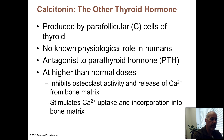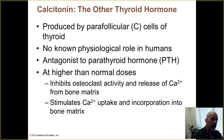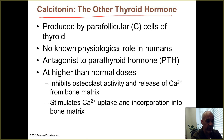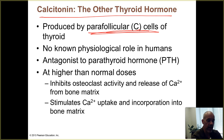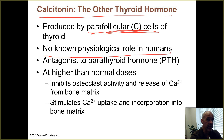Calcitonin is the other thyroid hormone. It's not made by the follicular cells but by the parafollicular or C cells — C for calcitonin — which sit in the spaces between the follicles in the thyroid. In humans there's actually no known physiological role, but in some other mammals it triggers calcium to be stored in osseous tissues, making it involved in calcium homeostasis.